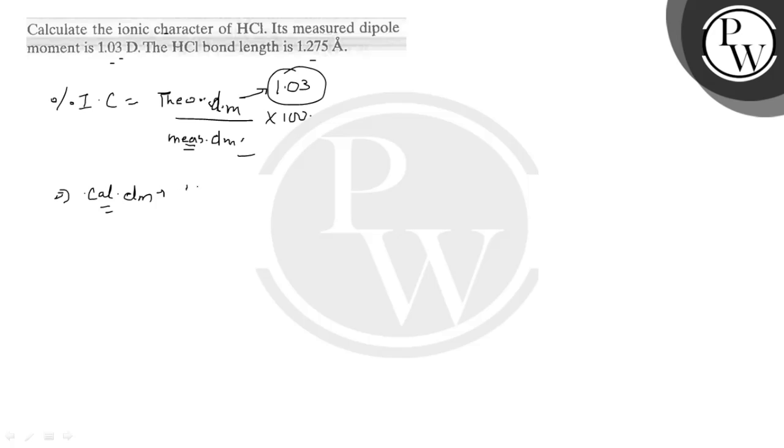Dipole moment is charge into distance, and distance is the bond length. The charge of the electron is 4.80 × 10^-10 ESU.